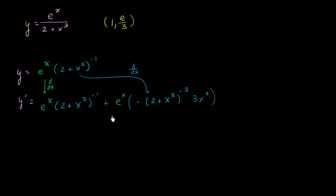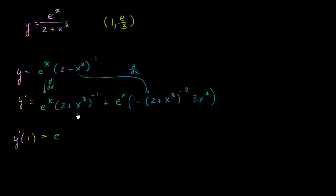But the whole point is to find the value of the derivative at this point. So let's evaluate y prime when x equals 1. When x is equal to 1, the first term becomes e times 2 plus 1 to the negative 1 power. That's 3 to the negative 1, which is 1 third. So times 1 third plus e to the first power.